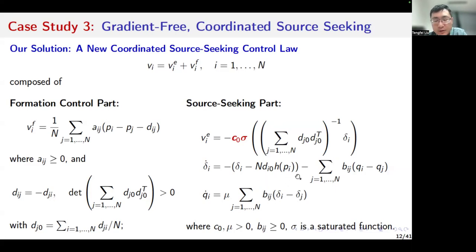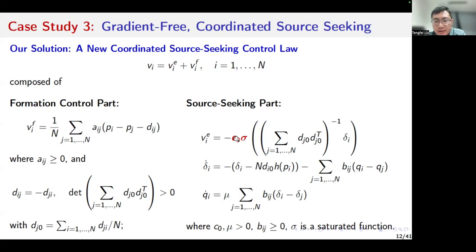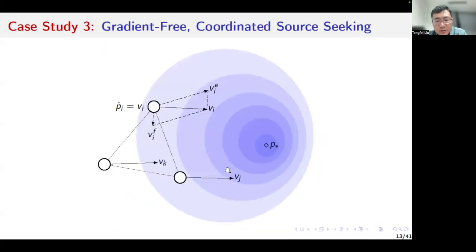The validity of this distributed averaging algorithm can be proved by using the mean value theorem. Then based on the estimation of the gradient information, we can design a controller to drive the multi-agent system to the minimum point. Here c0 is a positive constant, and sigma is the non-linear function. This figure shows the scenario of the problem and the basic idea of the control algorithm. V is basically used to keep the formation, and PIE is used to drive the multi-agent system to the optimum point.